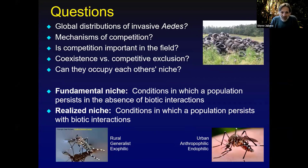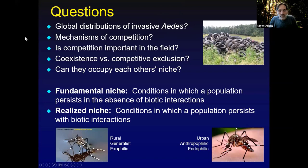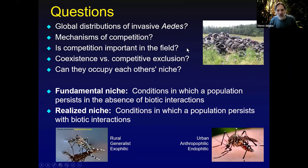This could take a couple of forms — enhancement of the abundance of a non-target competitor already present, or species-specific suppression could contribute to invasion of new areas vacated by non-target competitors from nearby areas. What I will talk about today is this in the context of two invasive species of Aedes: Aedes aegypti and Aedes albopictus. I'll try to answer a few questions about these two mosquitoes. First, what are their global distributions and how much do they overlap? Is competition important in the field?